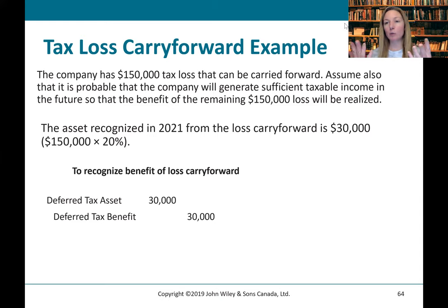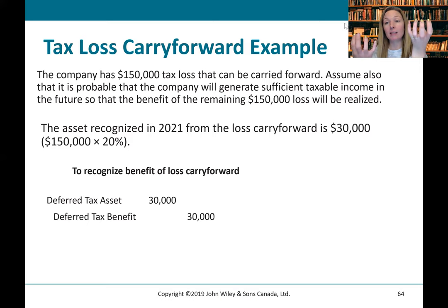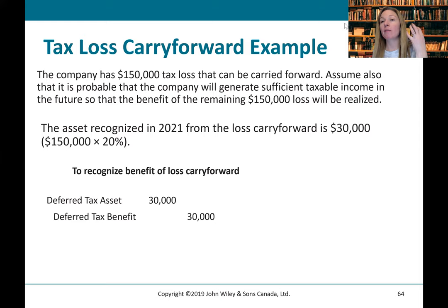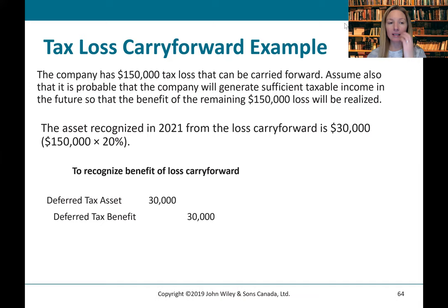It's really important to distinguish between taxable income — which is the base — and then times the tax rate, which gives you taxes paid. When we talk about $150,000, that's the base. The actual benefit we're going to get is $150,000 times the 20% tax rate, which gives us a benefit of $30,000.